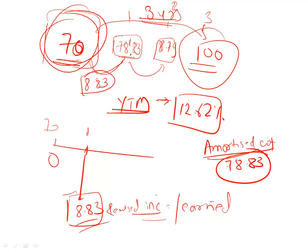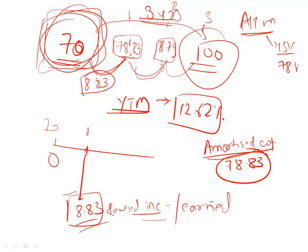So when you purchase a zero coupon bond, it is not paying you any coupons, but that does not mean you are not earning anything — you are earning it, it is just not being paid to you yet. A 70 rupee bond becomes 78.83 in year 1, 88.79 in year 2, and 100 in year 3. When classified as HTM, you show this bond on the balance sheet at amortized cost of 78.83, and 8.83 is shown as interest income on the income statement, even though you have not received that in cash.